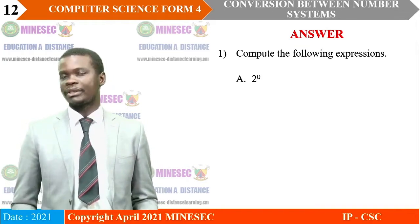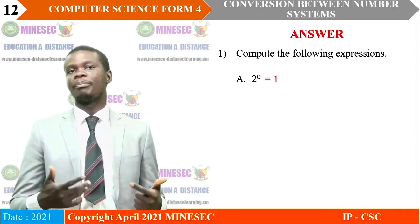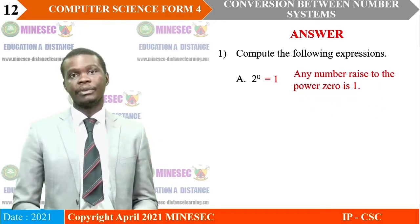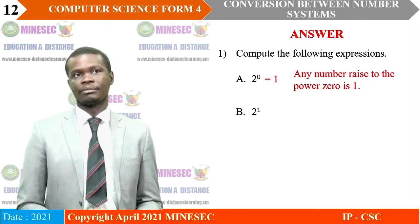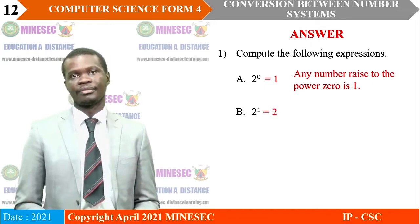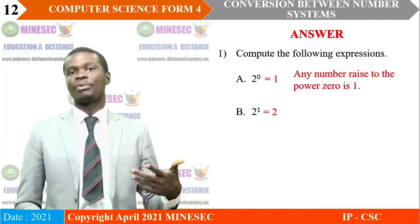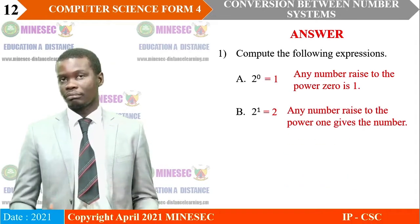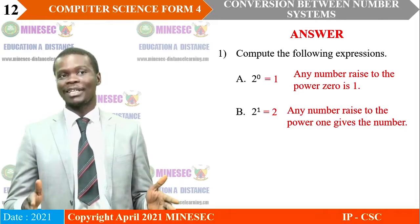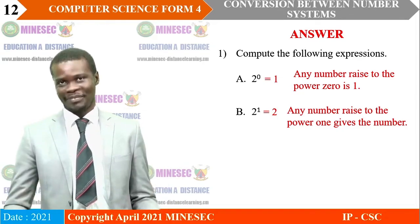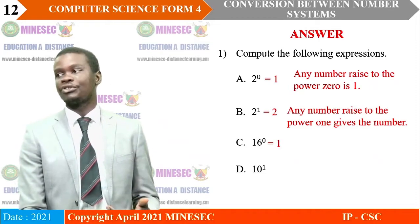2 to the 0 equals 1. Any number raised to the power 0 is 1. 2 to the 1 equals 2. Any number raised to the power 1 is that number itself. So 10 to the 1 is 10, 50 to the 1 is 50. Continuing with the same principle: 16 to the 0 gives us 1, and 10 to the 1 gives us 10.